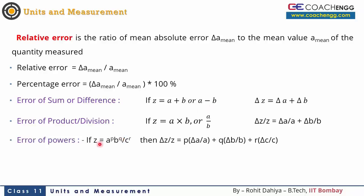If there are multiple powers — for example z = a^p × b^q / c^r — then: Δz/z = p×(Δa/a) + q×(Δb/b) + r×(Δc/c). Note that p, q, and r are the magnitudes of the powers, and all these error terms are positive and get added together.